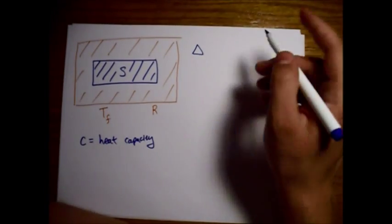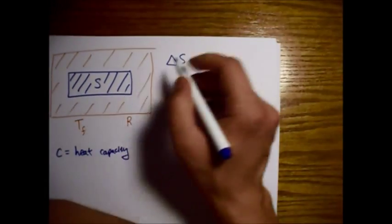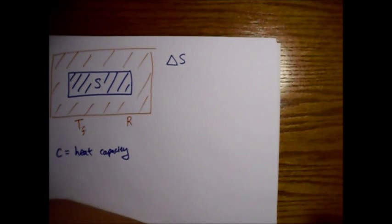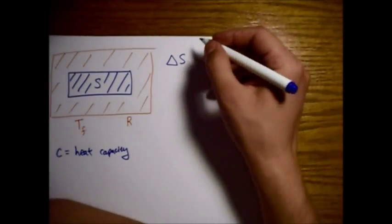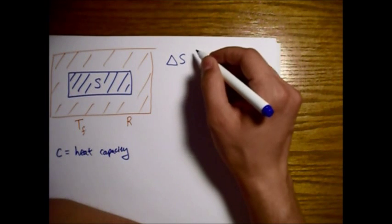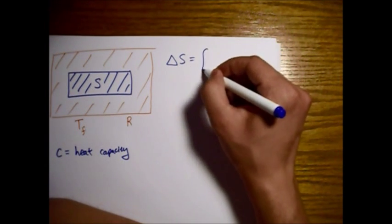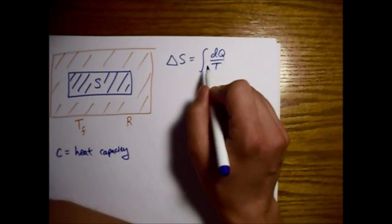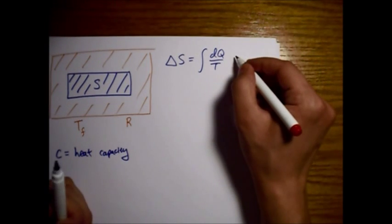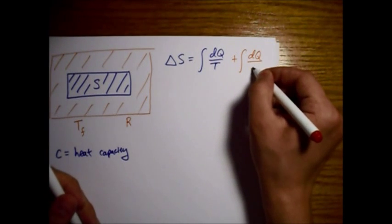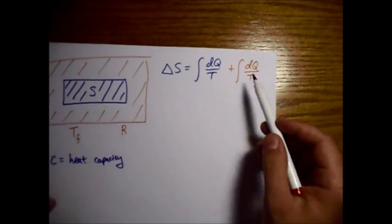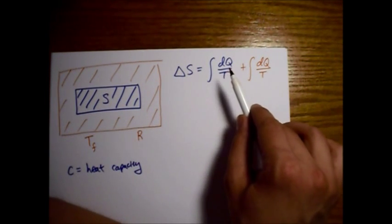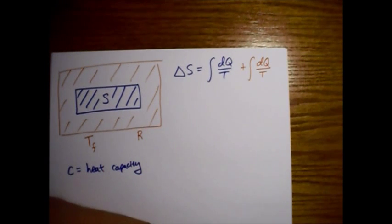So the total entropy change. First, the system will not be at the same temperature throughout this whole process, obviously. It will start cold and warm up slowly. So the temperature of this is changing. So we will have to integrate over the whole process. The way this is going to work is we are looking at the heat that is flowing into a system and at what temperature is the system at as the heat flows in.